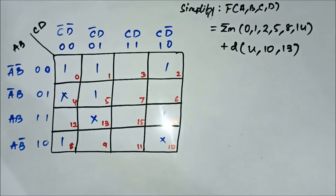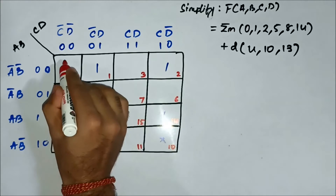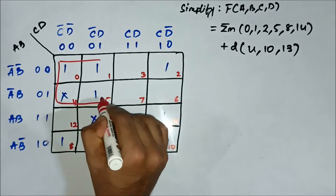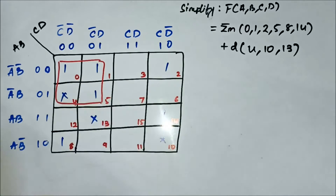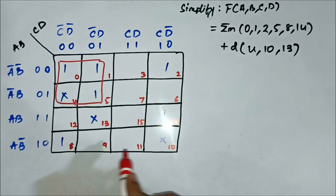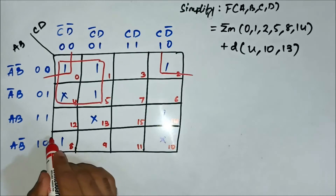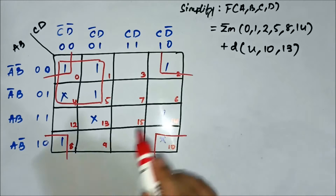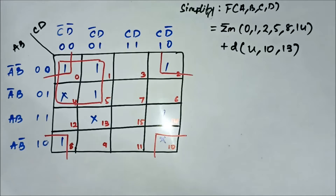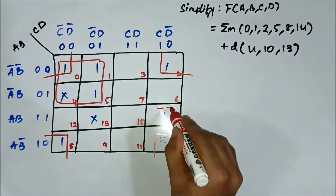Now we'll form the groups. We can see cells 0, 1, 4, and 5 — we can form a quad. Then the four corner cells 0, 2, 8, and 10 — we can form another quad. And then cells 10 and 14 — we can form a pair.